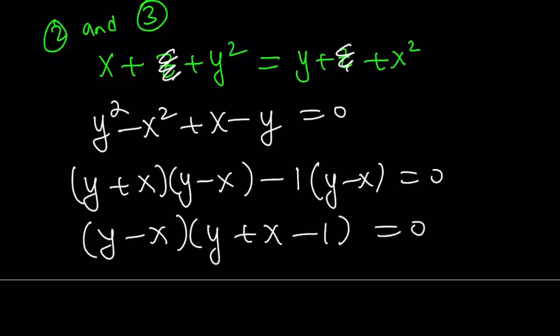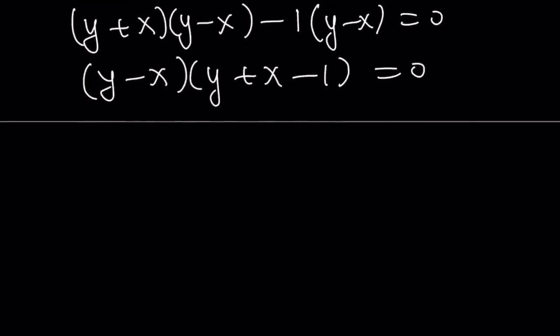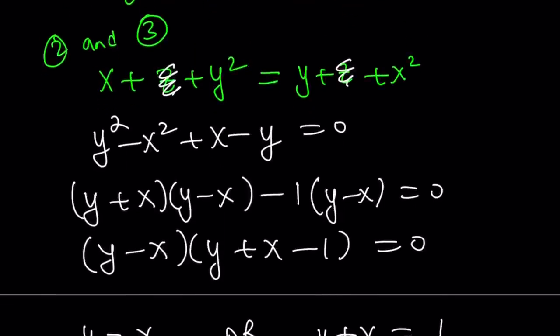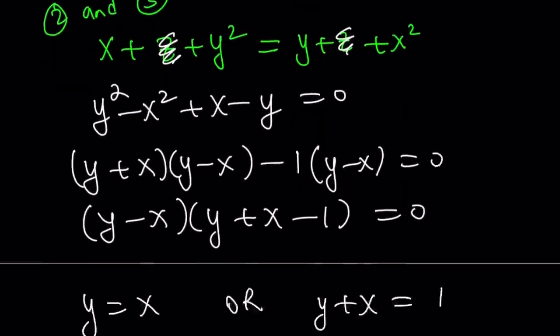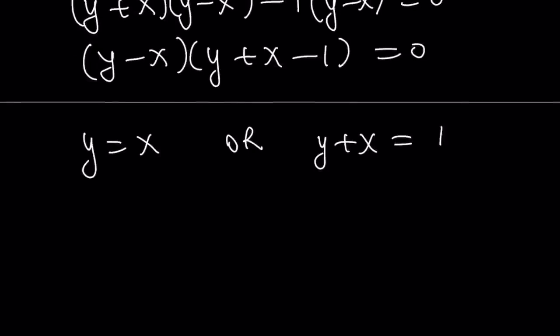This is also nice, just like the one and two. This gives us either y equals x or y plus x equals one. So, I kind of got like two statements: z equals y or z plus y equals one, or we got y equals x or y plus x equals one. So, we're going to look at these different cases.